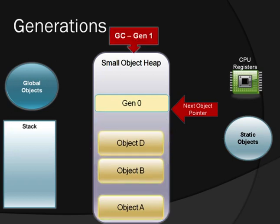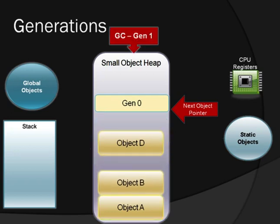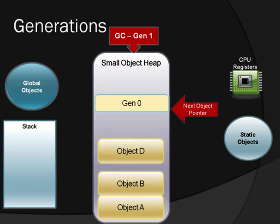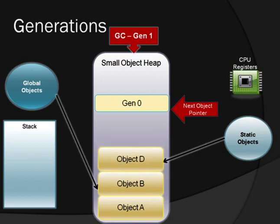So Gen 1 runs. We have objects A, B, and D belonging to Generation 2. Generation 1 is empty, Generation 0 is empty, and the Generation 1 garbage collection is complete.